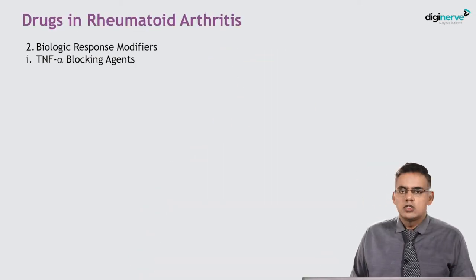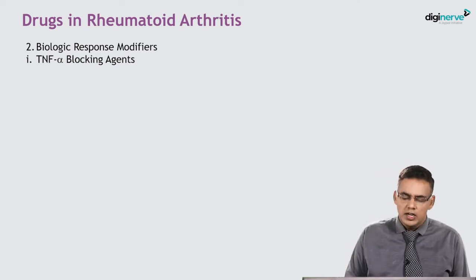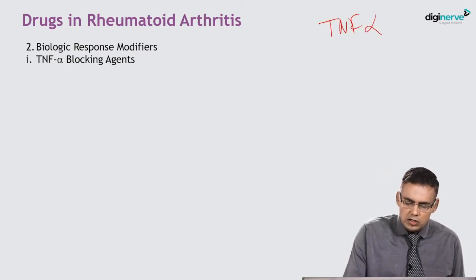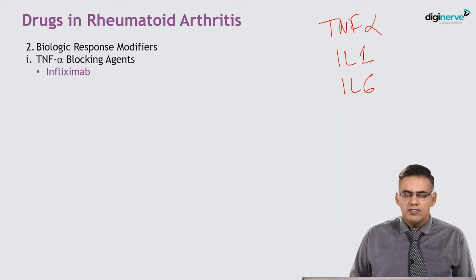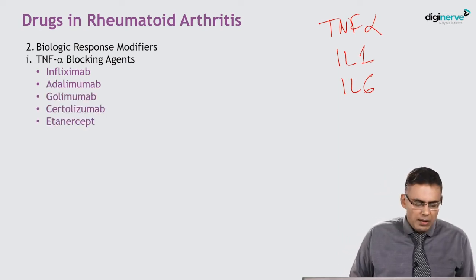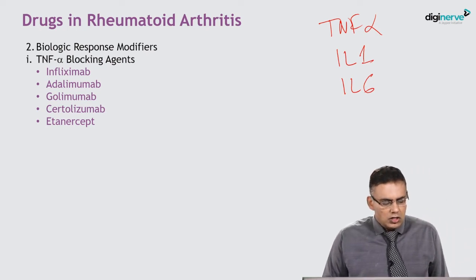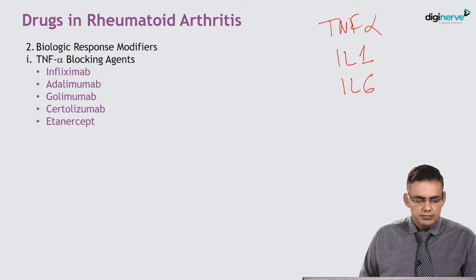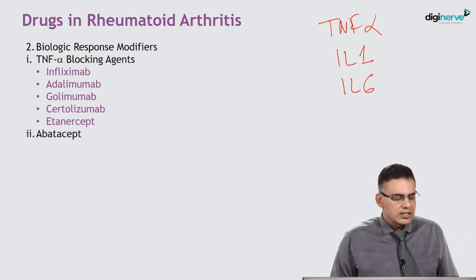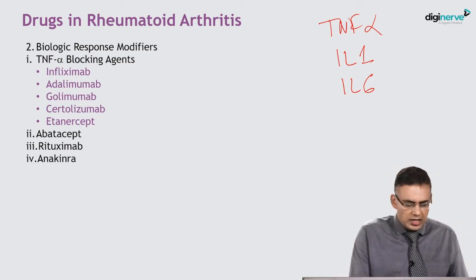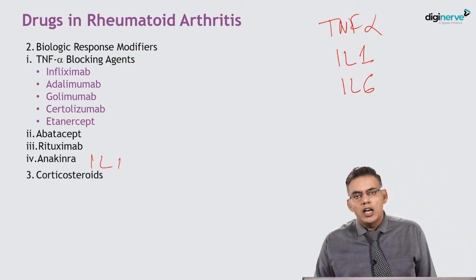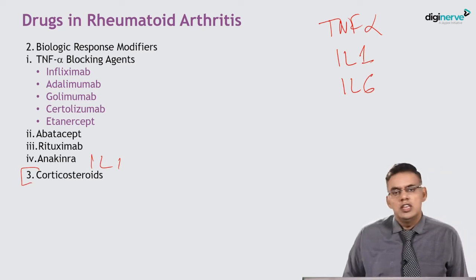These biologic agents are given parenterally. TNF-alpha blocking drugs include infliximab, adalimumab, golimumab, certolizumab, and etanercept. We also use abatacept, rituximab, and anakinra which acts at interleukin-1. Corticosteroids are immunosuppressants that can only be used initially as a bridging therapy while waiting for a response to DMARDs.